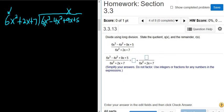Then you multiply. x times 6x² is 6x³. x times 2x is 2x². And x times 7 is 7x.